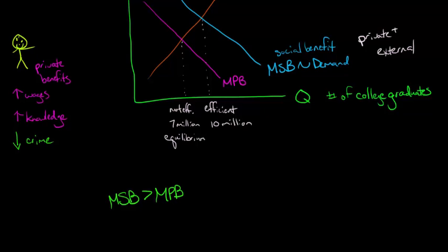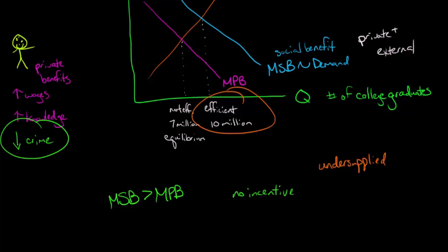But the person has no incentive. There's no incentive for the person to say, hey, what about the reduced crime for everybody else and so forth? They're not thinking about those things. And so what's going to happen is that education is going to be undersupplied. That's what we're talking about when we say that the socially efficient amount of college graduates would be 10 million, but the actual amount is 7 million. So we're short by 3 million. We say, hey, education is being undersupplied here.